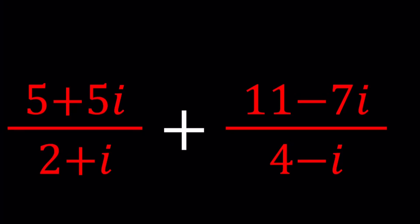Hello everyone, welcome to a plus bi. This channel is all about complex numbers, and in this video we're going to be simplifying a rational expression. We have 5 plus 5i divided by 2 plus i, and 11 minus 7i divided by 4 minus i, and we're going to add these up.